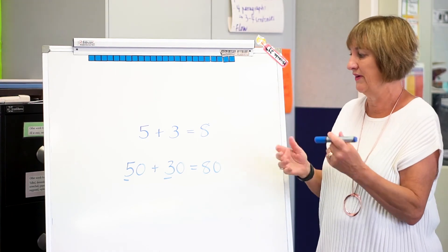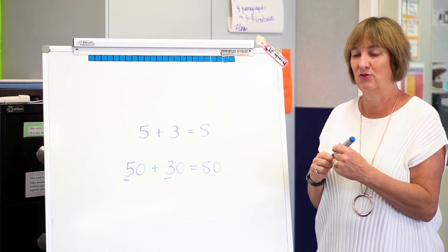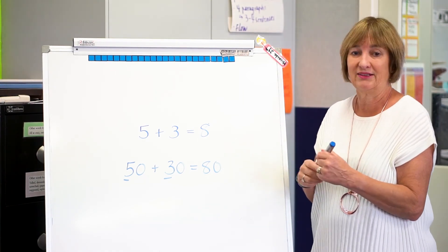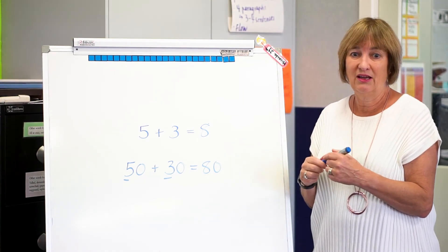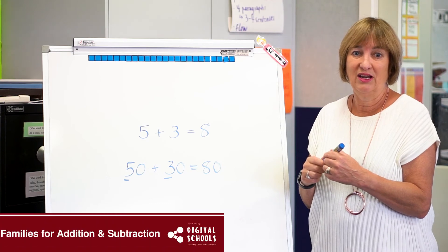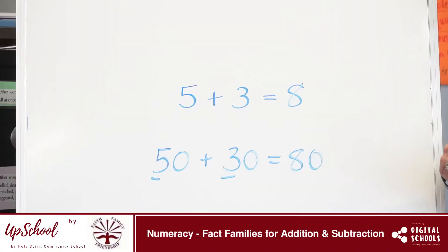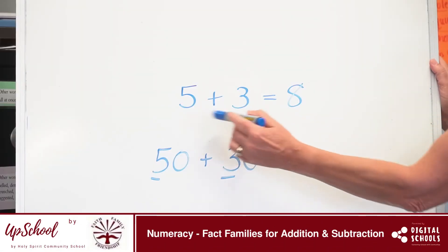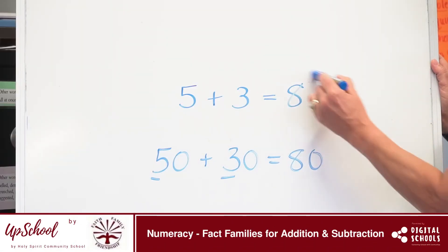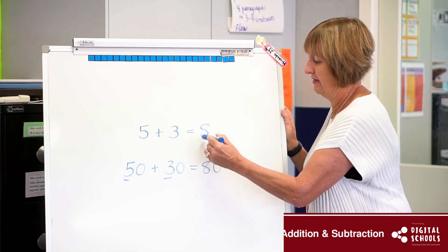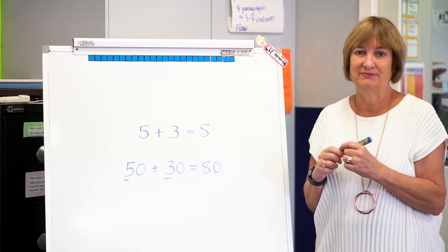And they can use that for 500 plus 300, 53 plus 30, 510 plus 30. Whenever you see 5 and 3, somewhere you're going to have 8.